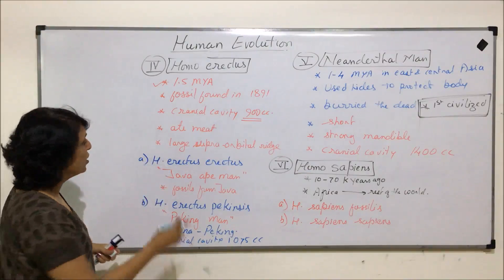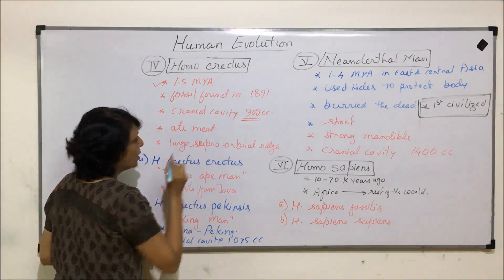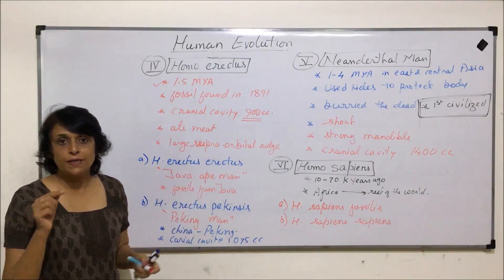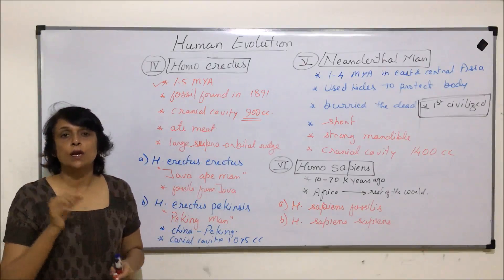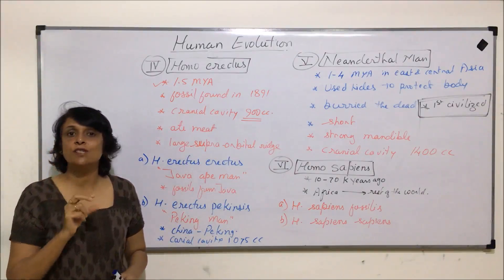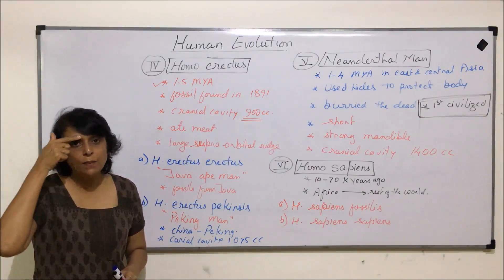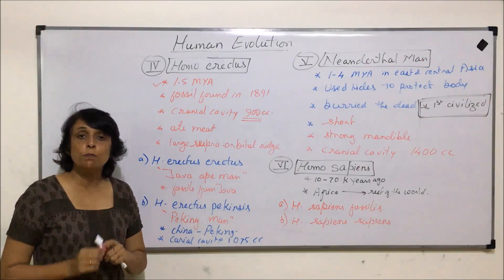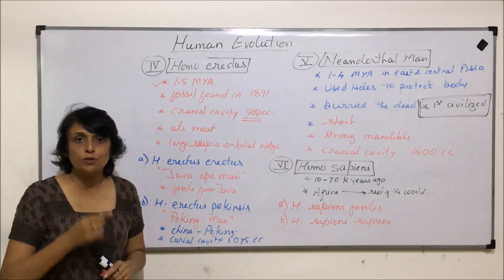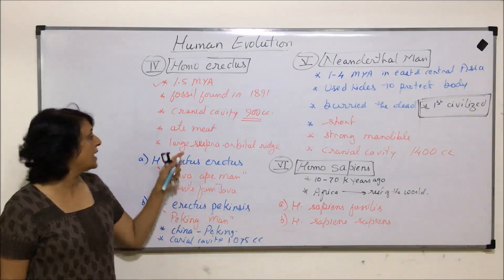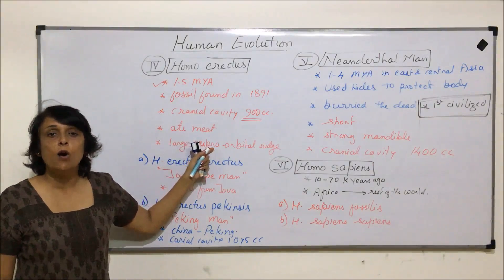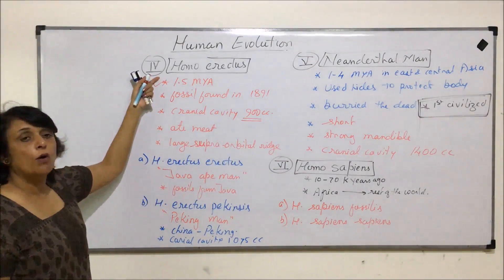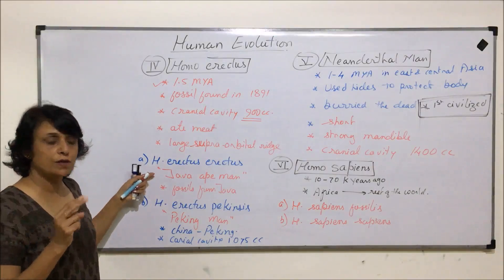Homo erectus had large supraorbital ridges. The supraorbital region is the area of the face where the eyebrows are present — the bone above the eye socket. This ridge was very prominently developed in Homo erectus, forming a noticeable bulge on the face.